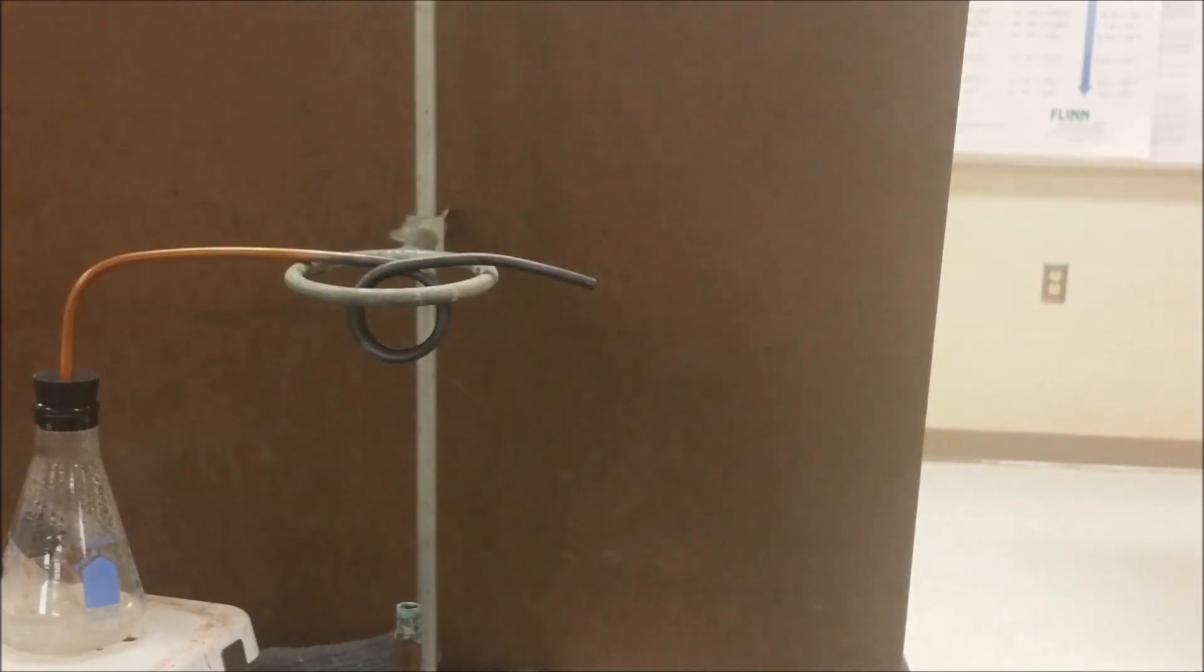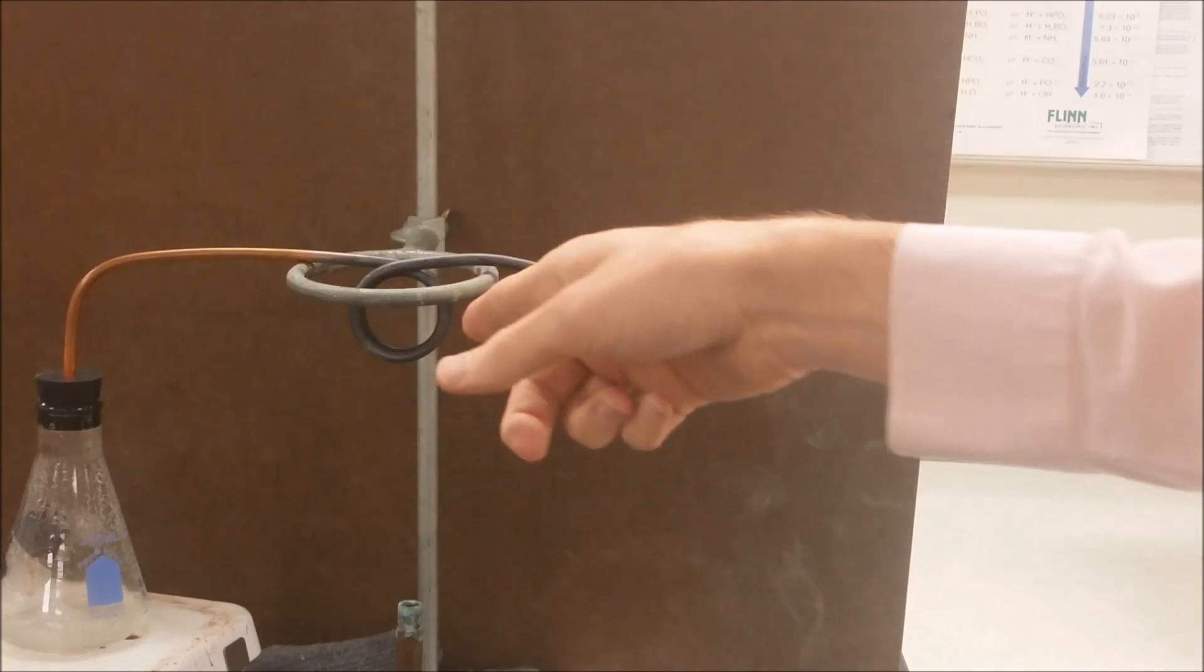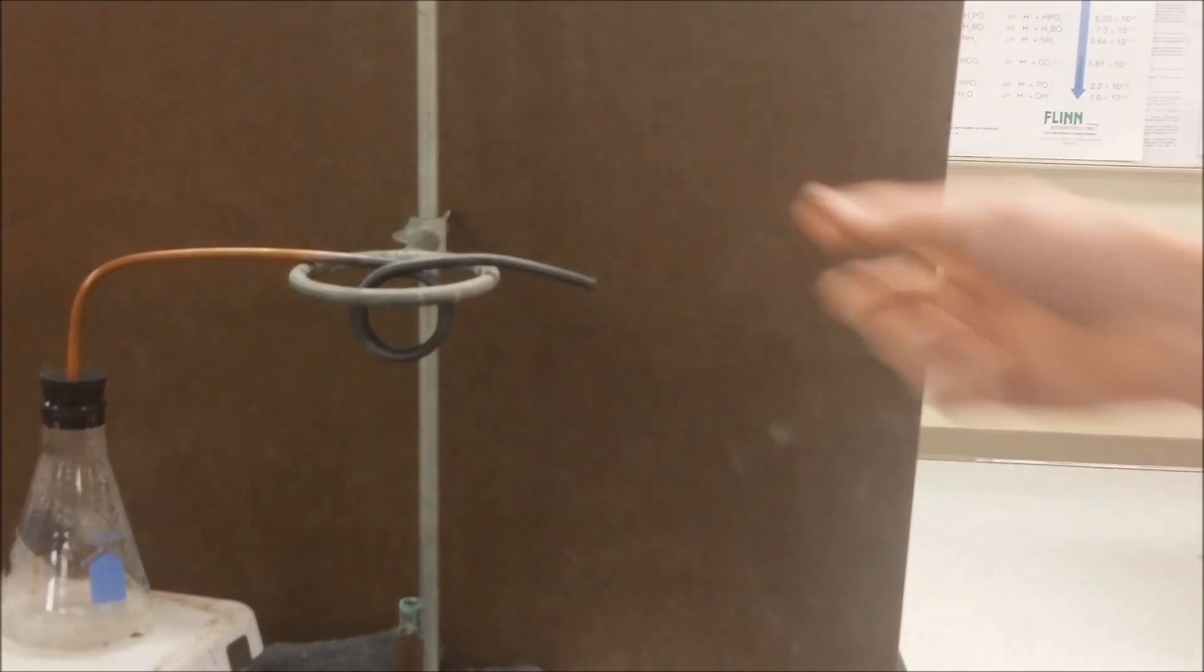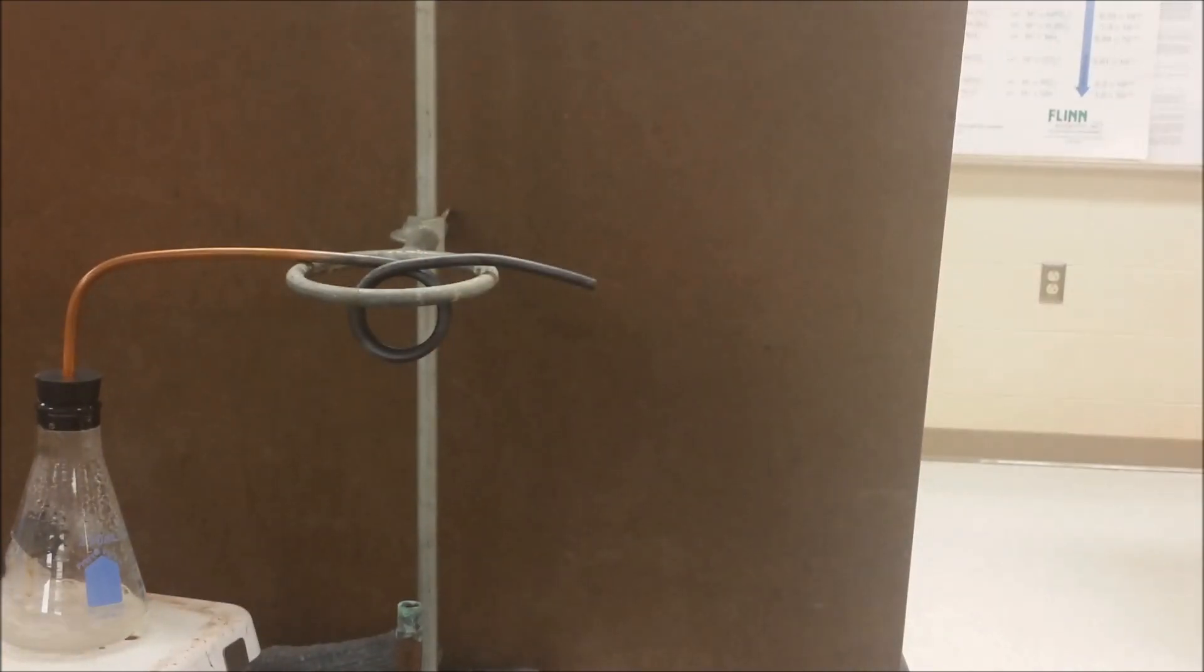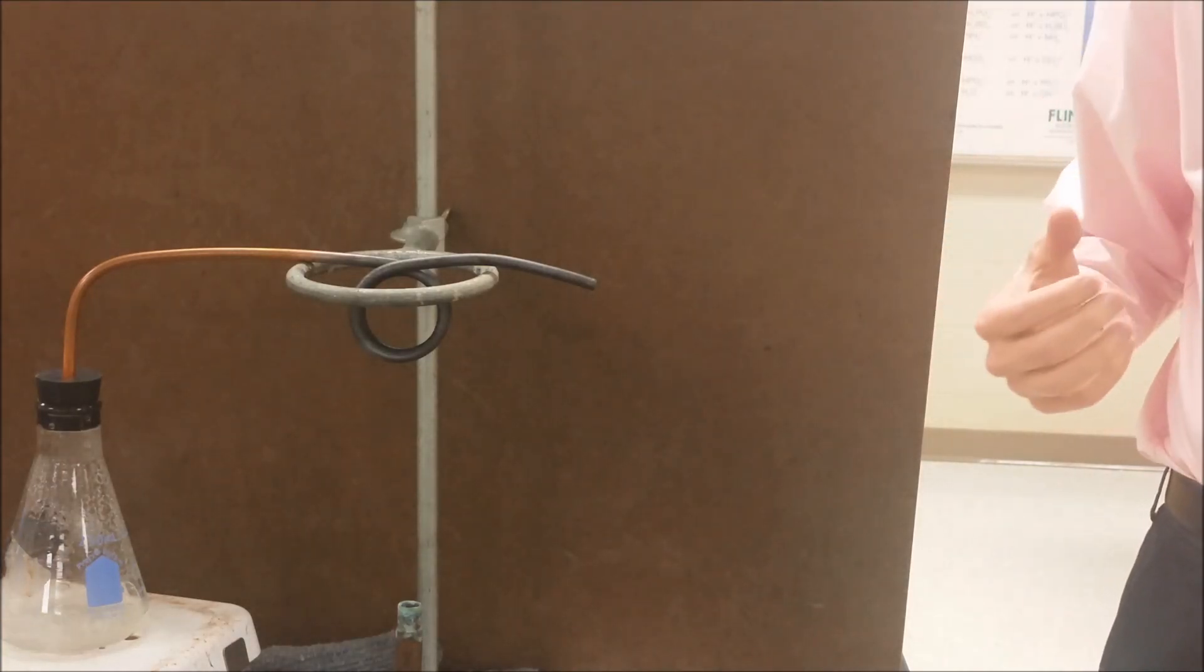Now I just turned off the hot plate and the Bunsen burner, and so now what should happen is this should start to cool. That means the steam coming out is going to be able to start reforming the liquid state and we're going to see that cloud reappear in just a little bit of time, because that steam is going to be cool enough that it can turn back into the liquid state as it comes out of the tubing.